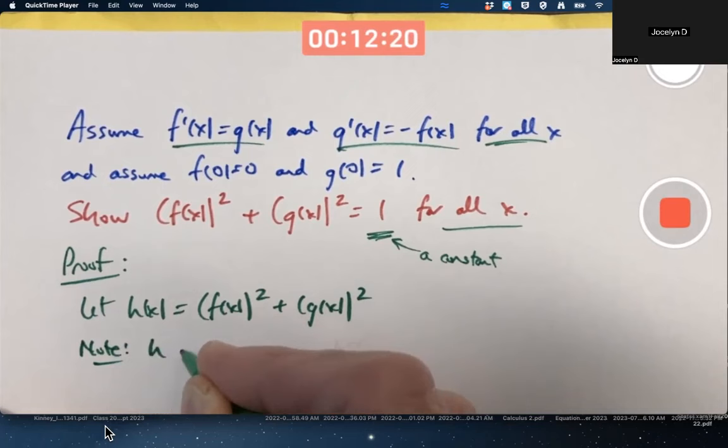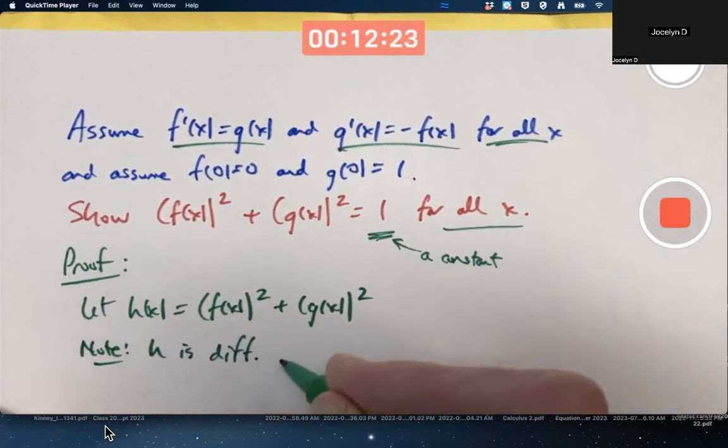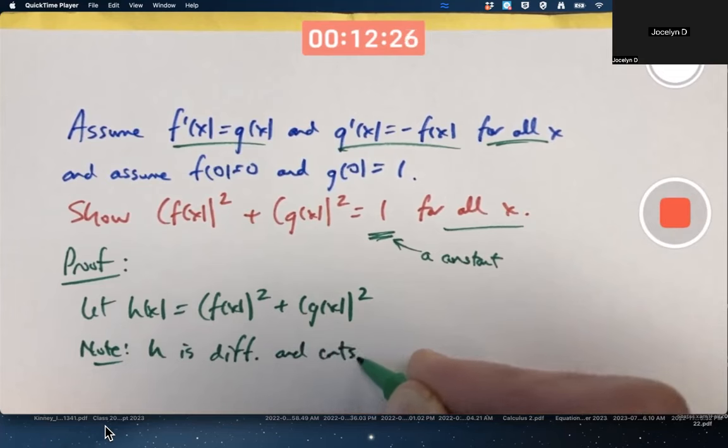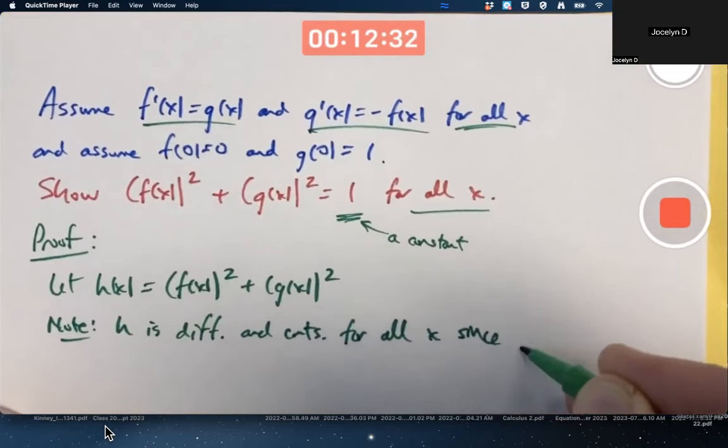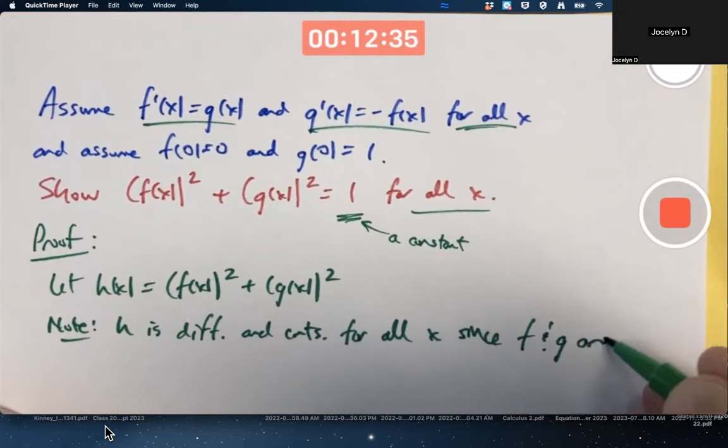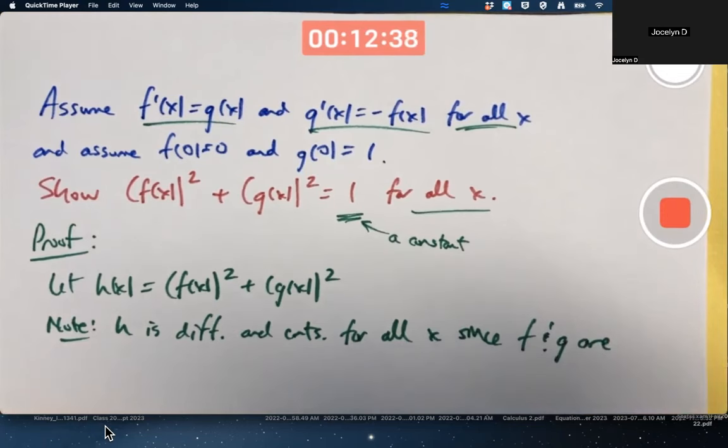Let h of x be f of x quantity squared plus g of x quantity squared. Note, h is differentiable, I'll just abbreviate here, and continuous for all x, since f and g are, that was an implicit assumption. And since h is a nice, simple combination of f and g, where we're not dividing by 0 anywhere, you can prove that if you square a continuous function or differentiable function, you get a continuous or differentiable function. If you add two such functions, it'll still be continuous and differentiable. That can be proved.